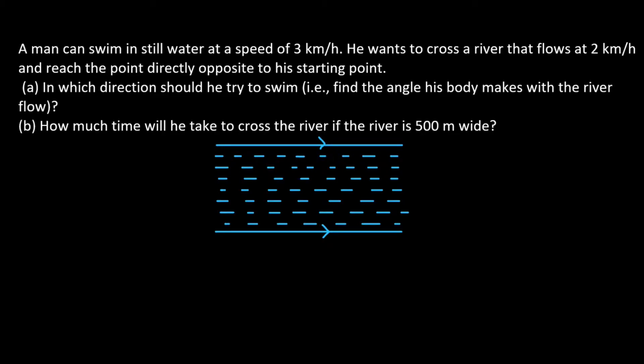He wants to reach the opposite bank directly at the opposite point. That is the sub-question. In which direction should he try to swim? That is, what angle should his body make with the river flow. Or, if the river is 500 meters wide, how much time will it take to cross the river?